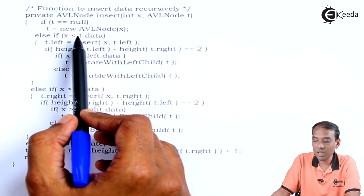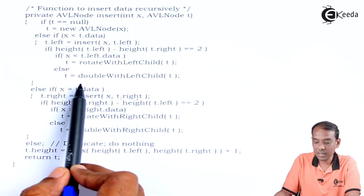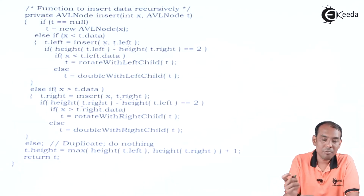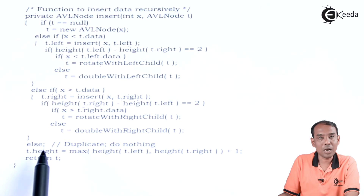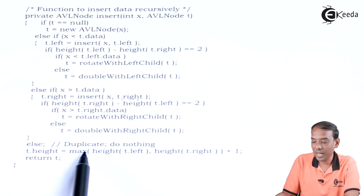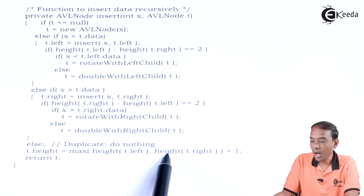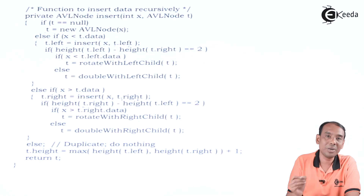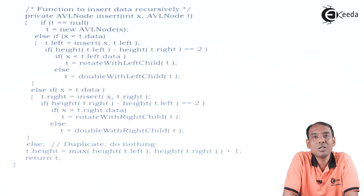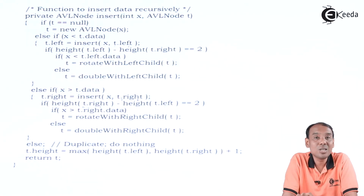Once we are done with both the less-than and greater-than cases, we handle the else part for duplicate values, and update the height: t.height = max(height(t.left), height(t.right)) + 1. Then we return t. This ensures the balancing factor of each and every node is checked and maintained as -1, +1, or 0 — this is how you insert a value into an AVL tree.